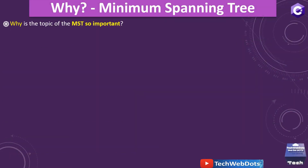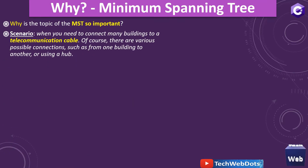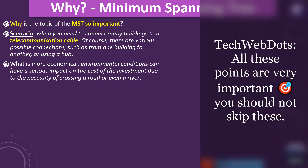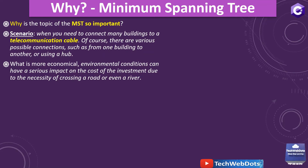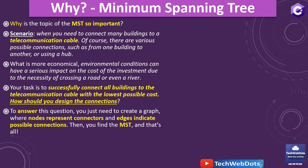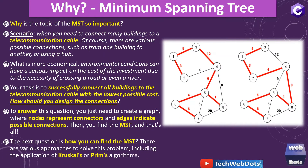Now, why is minimum spanning tree important? When you need to connect many buildings to telecommunication, there are various possible connections such as from one building to another using a hub. Environmental conditions can have serious impact on the cost of investment due to the necessity of crossing a road or even a river — different instances can increase cost. We should pick the most economical option. Your task is to successfully connect all the buildings to telecommunication cable with the lowest possible cost. You just need to create a graph where nodes represent connectors and edges indicate possible connections, then find the minimum spanning tree.